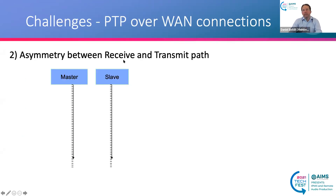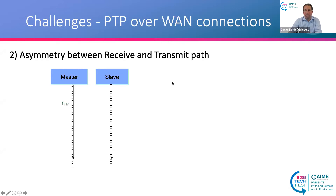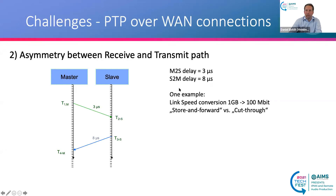Another challenge is asymmetry between the receive and transmit paths — cases where the transmission of a packet takes a different time than the reception of the answer. For example, you may have a packet sent from master to slave taking a certain time and the reverse direction taking a different delay: 3 microseconds in the forward direction and 8 microseconds in the backward direction.